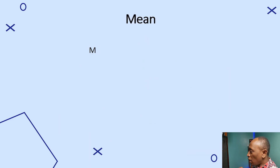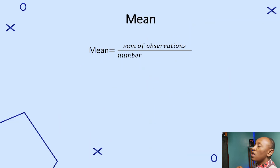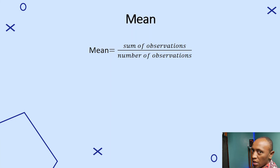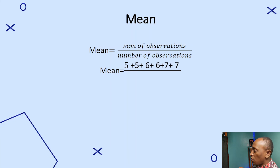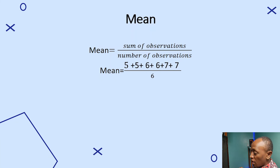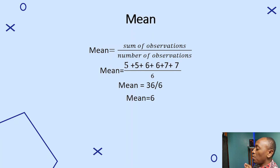Let's calculate the mean for Friday the 13th. The formula for the mean is the sum of observations divided by the number of observations. The mean equals 5 + 5 + 6 + 6 + 7 + 7 divided by 6. The total is 36 divided by 6, so the mean is 6.